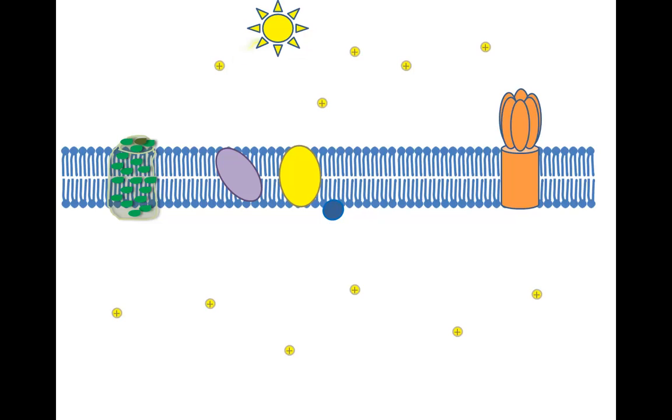When sunlight hits the photosystem, it excites electrons in the pigment molecules of the photosystem. An excited electron is expelled from the reaction center of the photosystem. The excited electron is passed down the electron transport chain, and its energy is used to pump protons across the membrane.